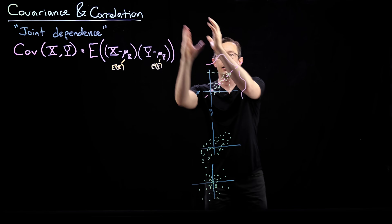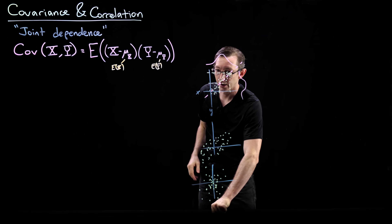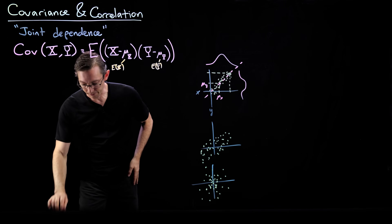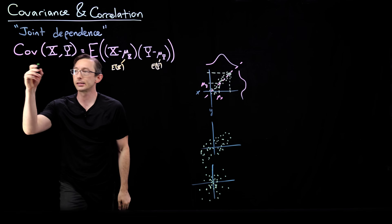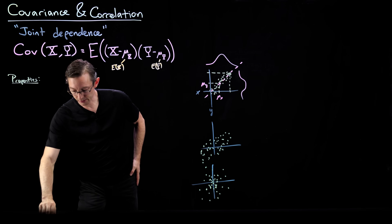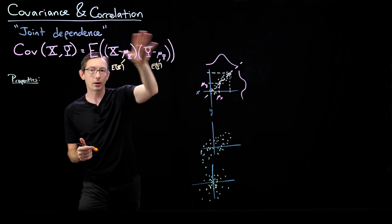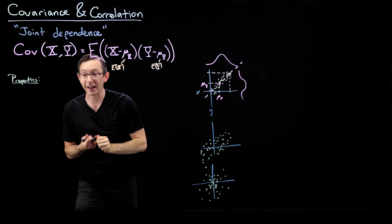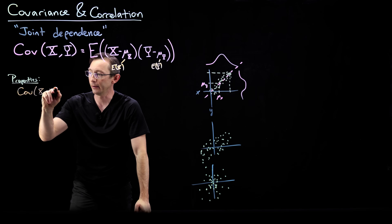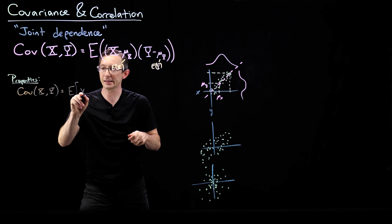It doesn't matter where the mean of this distribution is, since we're already subtracting off mu x and mu y. Now let's write down some properties. I'm going to expand out the covariance definition and come up with a useful formula in terms of expectations of x and y. The covariance of x and y equals the expected value of the product x·y minus mu x times big y, minus mu y times big x, plus mu x times mu y.